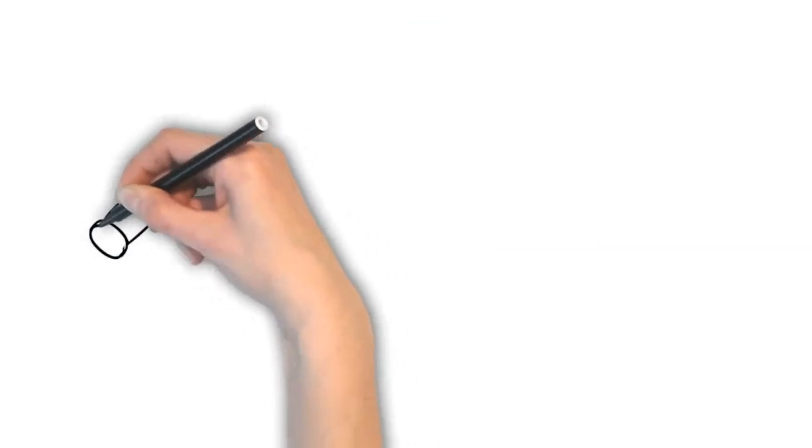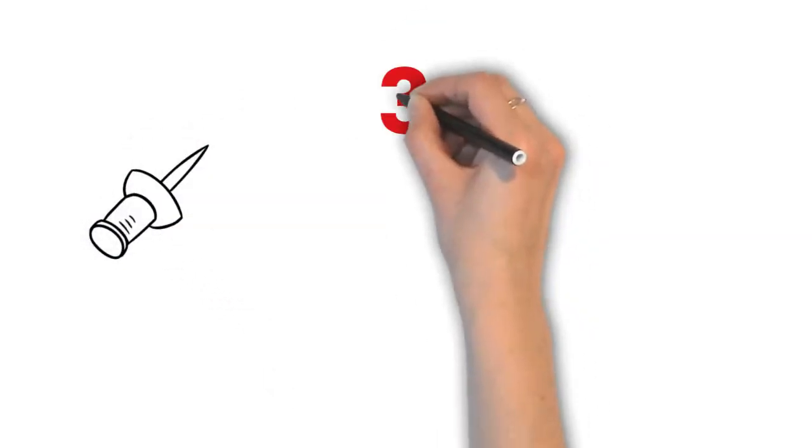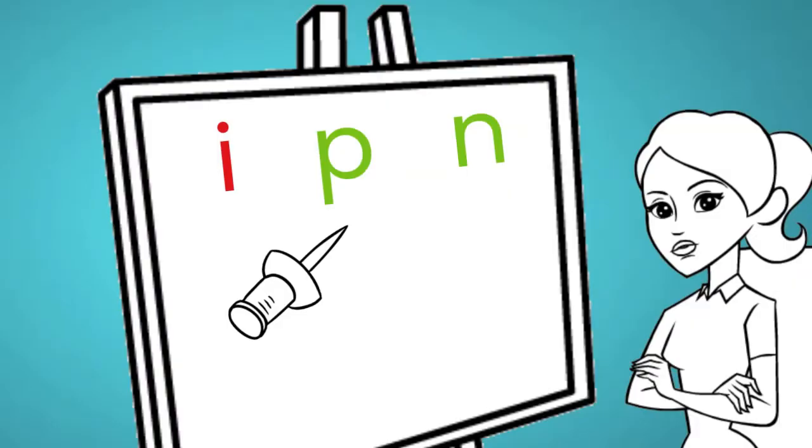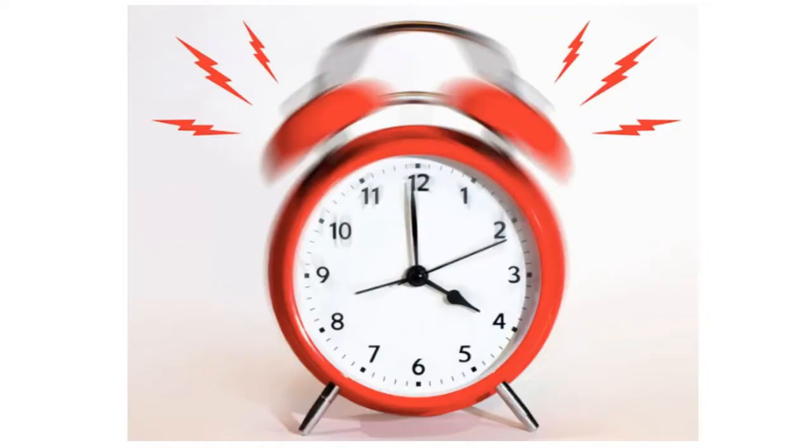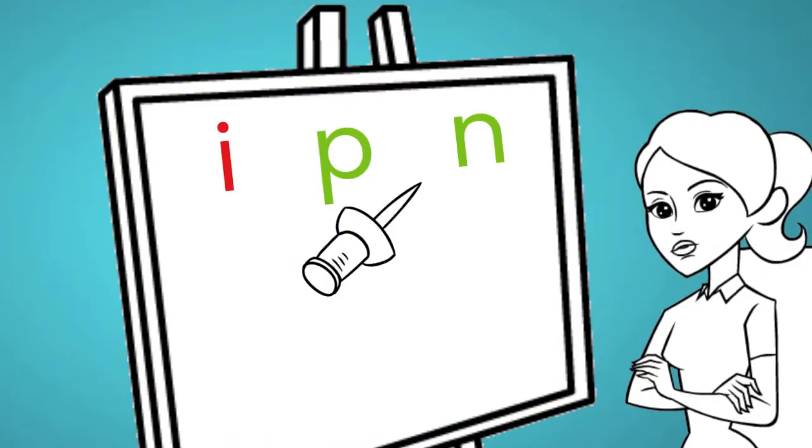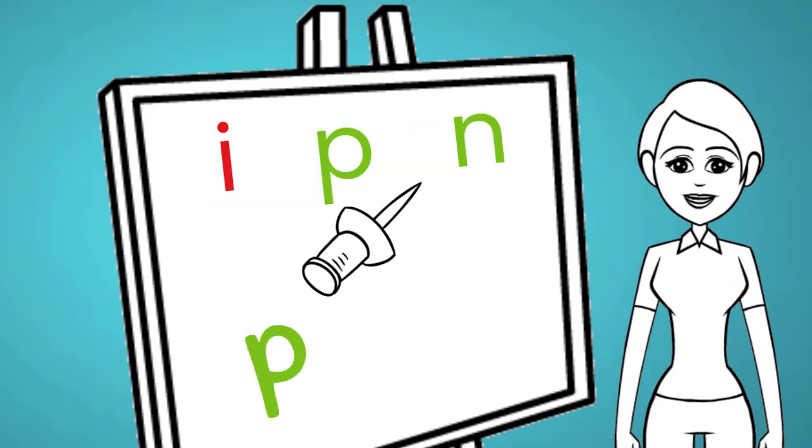The first word that you'll be spelling is 'pin'. Start spelling in three, two, one, go! Okay, time's up friends. How did you spell pin? Let's sound it out. P-I-N. So it should have been spelled P-I-N.